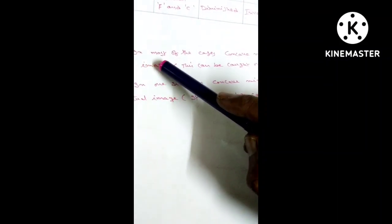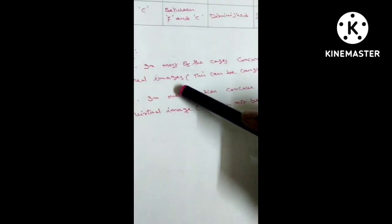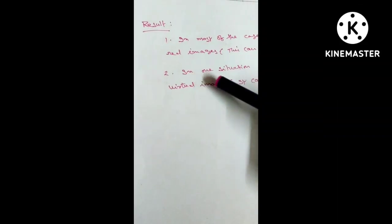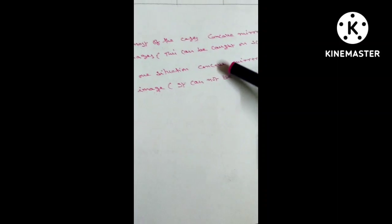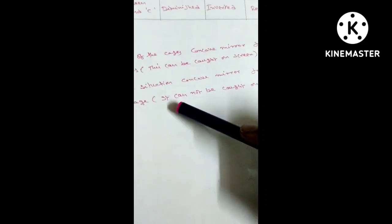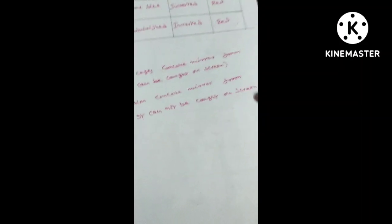In most of the cases, concave mirror forms real images. This can be caught on screen. In one situation, concave mirror forms virtual image. It cannot be caught on screen.